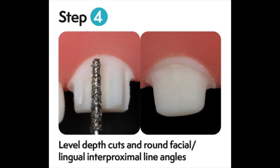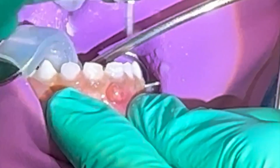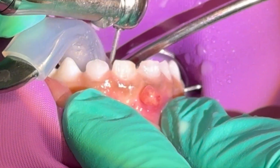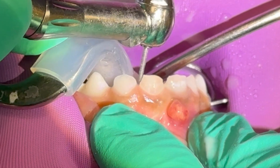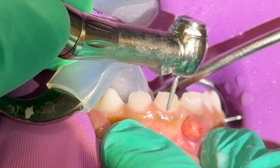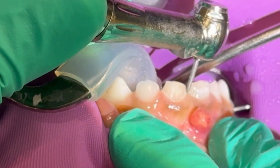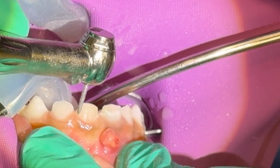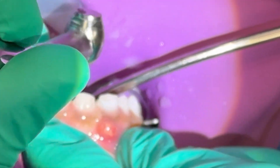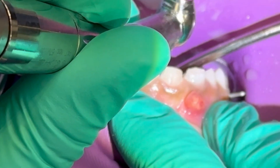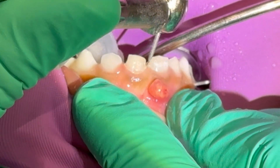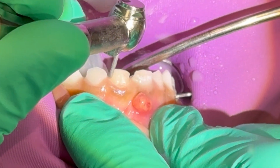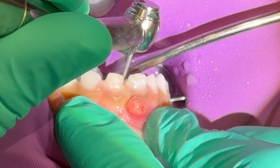Then we're going to blend those reductions and smooth all of our line angles. Over-tapering your burr can cause issues, so you can appreciate me blending the facial depth cuts and reduction planes and then starting to blend the interproximal slices as well, trying to hold the burr as straight up and down as possible along the long axis of the tooth. I like to continuously evaluate and assess how I am orienting my burr to make sure I'm only allowing a minimal amount of taper.